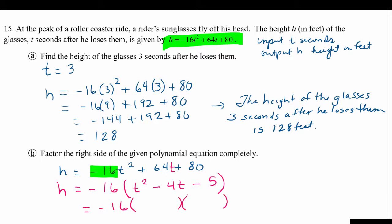Alright, and then this is a trinomial with a = 1. So two numbers that multiply to -5 and add up to -4 are -5 and +1. So there we go, there's our factored form.